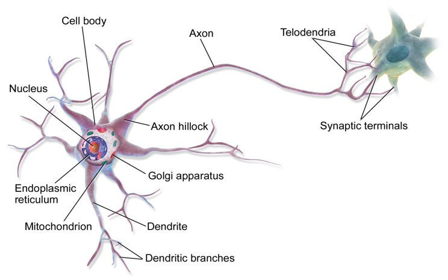A neural circuit is a population of neurons interconnected by synapses to carry out a specific function when activated. Neural circuits interconnect to one another to form large-scale brain networks. Biological neural networks have inspired the design of artificial neural networks, but artificial neural networks are usually not strict copies of their biological counterparts.